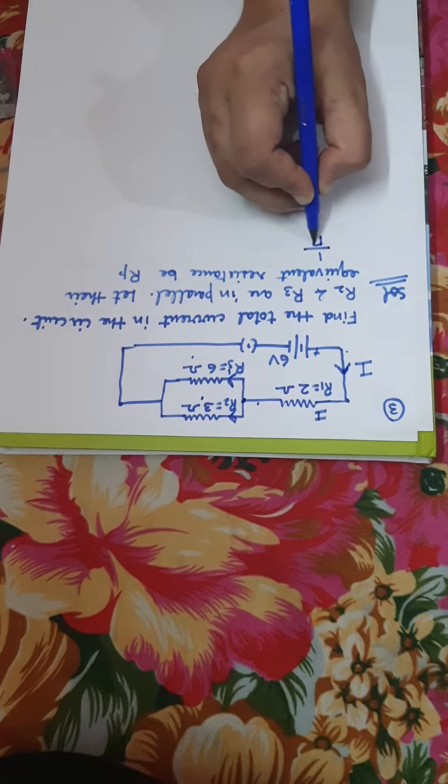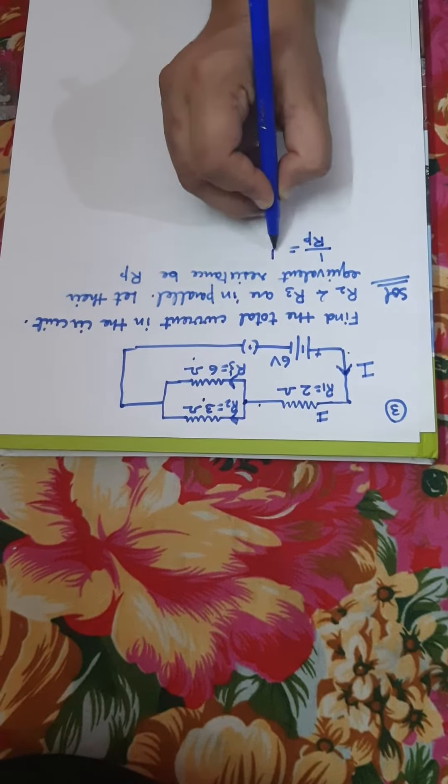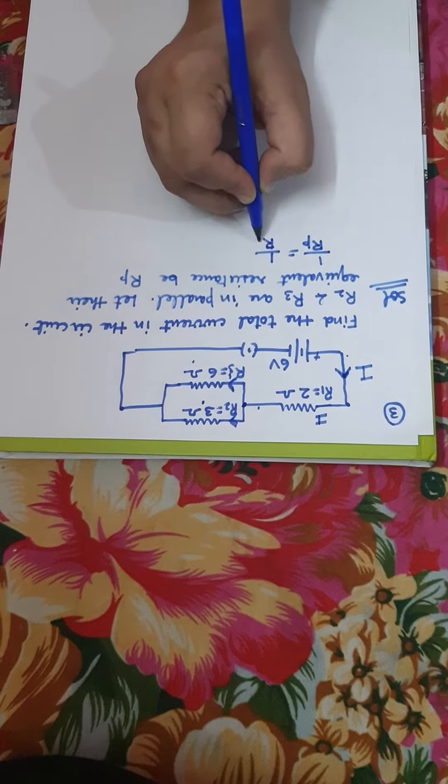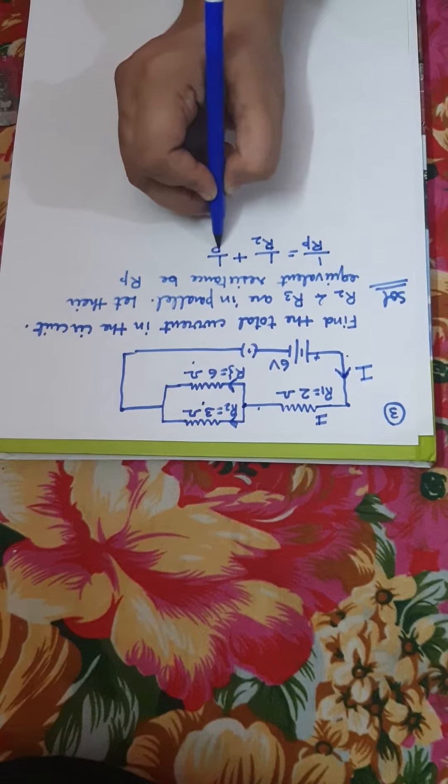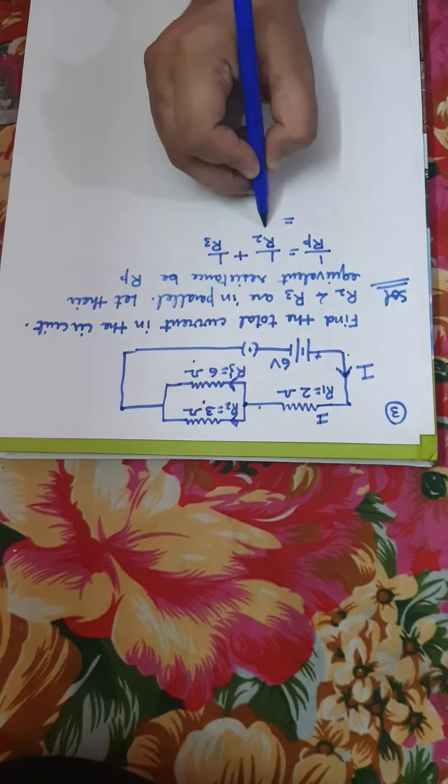So we will use the formula 1 upon Rp is equal to, here we have R2 and R3, so we will use 1 upon R2 plus 1 upon R3. So it will be 1 by 3 plus 1 by 6.